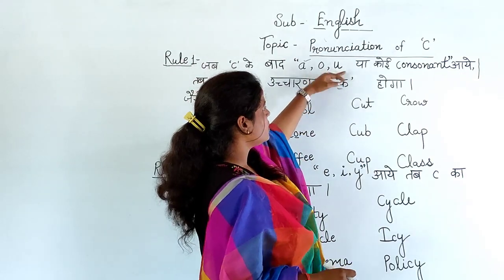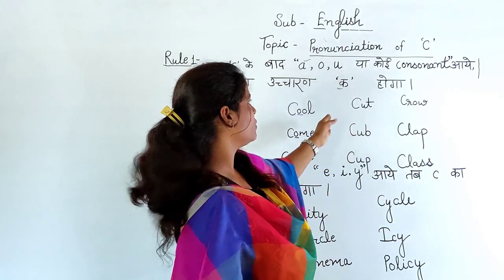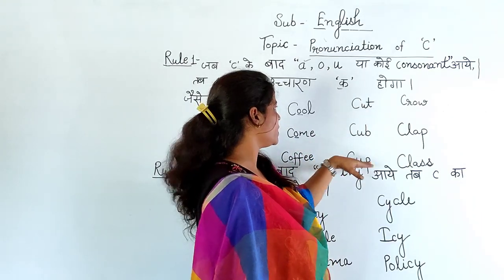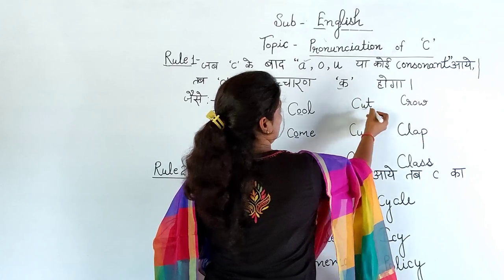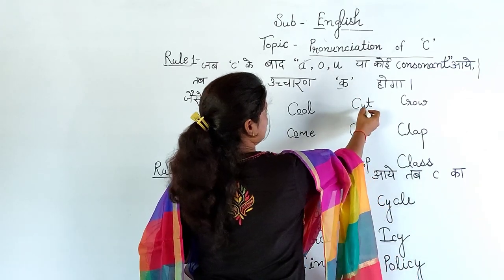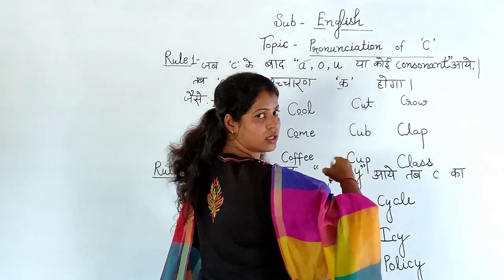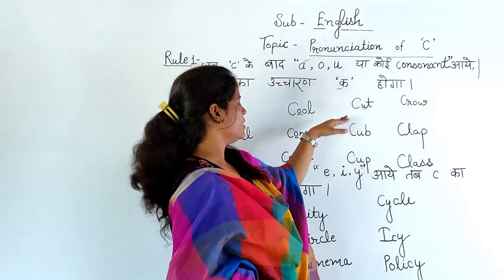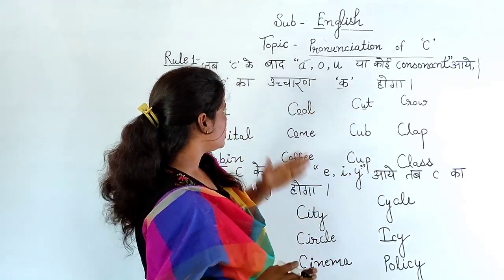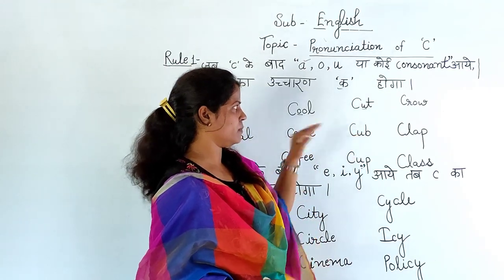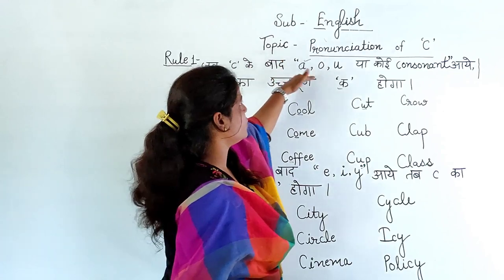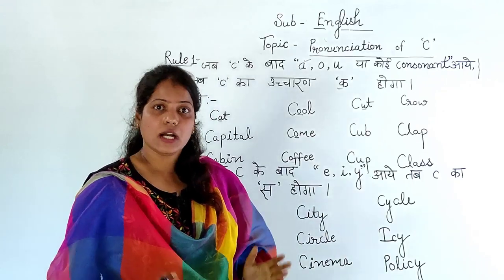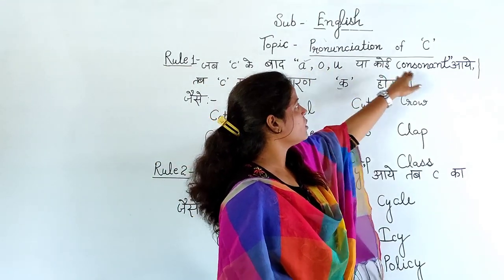Next, here we have U, so I have written three examples with the letter U. C-U-T, Cut; C-U-B, Cub; C-U-P, Cup. Here also after C comes U. So you will pronounce C as 'K'. Cut, Cub, Cup. So this completes the A, O, U part of Rule 1 — when C comes after A, O, U, you will do the 'K' pronunciation of C.